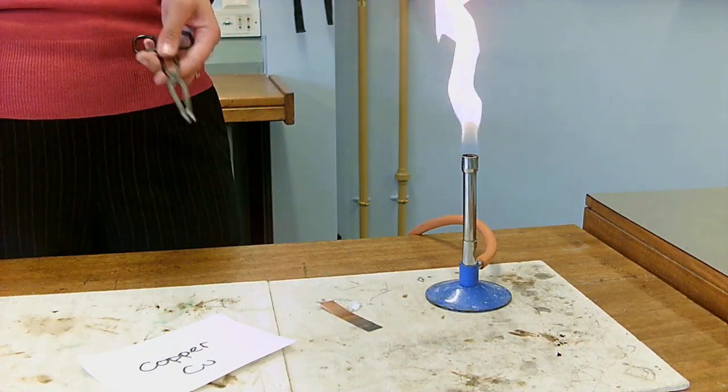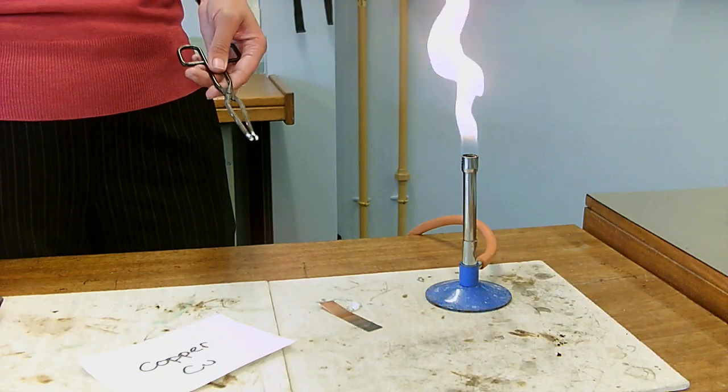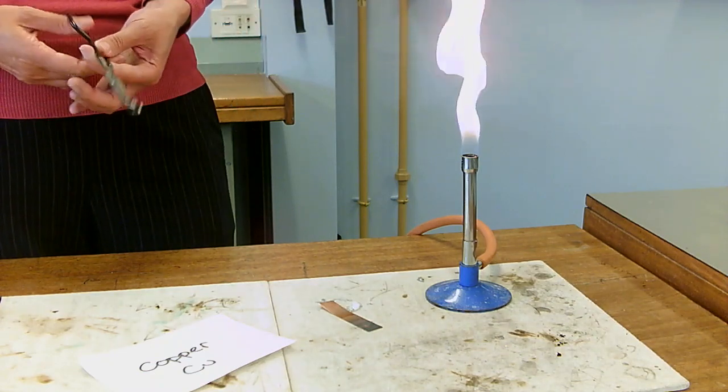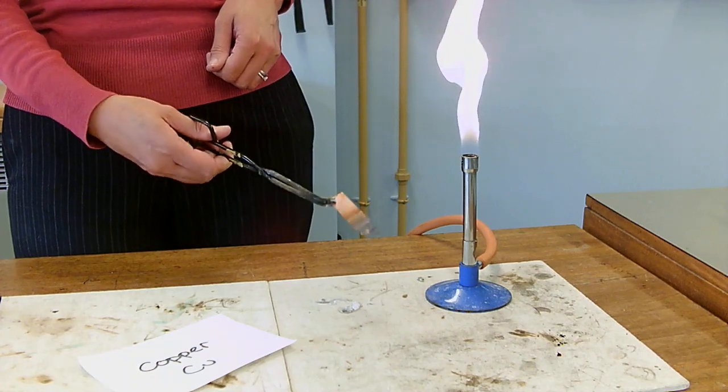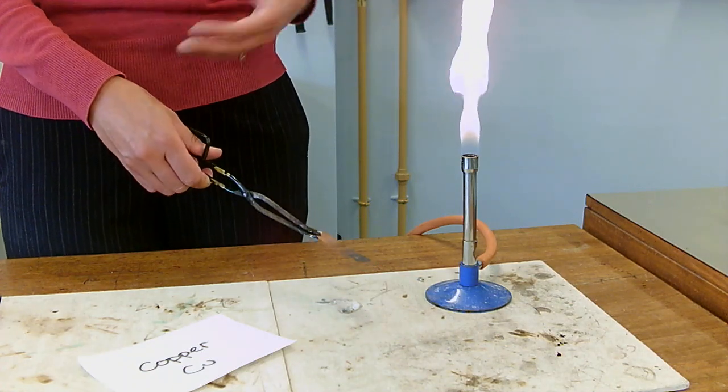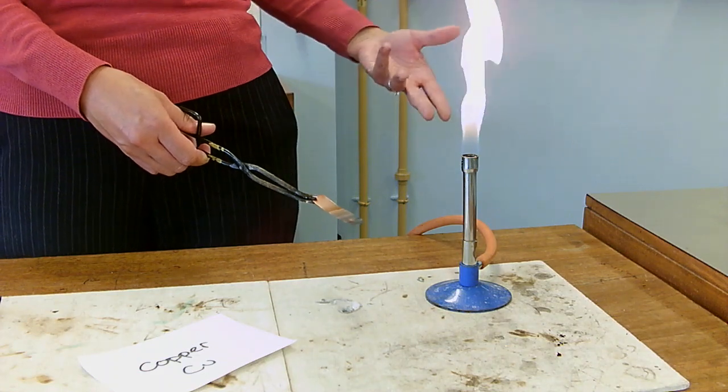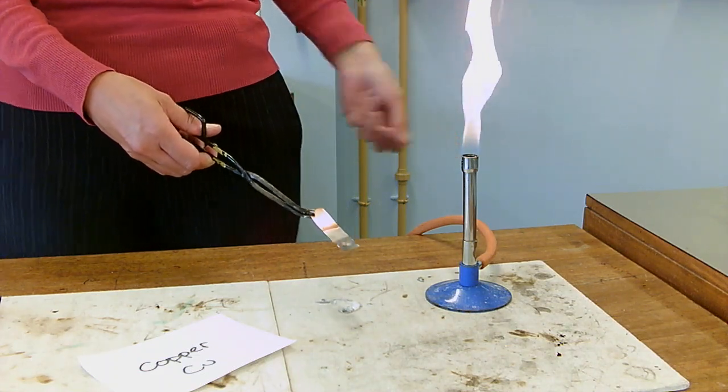So, the copper is reacting with oxygen a little bit. It's made this gray layer of copper oxide, but only the very outside of it did it and it didn't do very excitingly. So, copper will react with oxygen to make copper oxide. It's pretty slow.